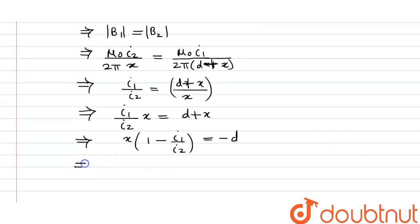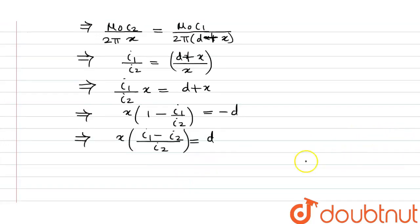So it will further give us x bracket i1 minus i2 divided by i2 equals d. So now we know the values of i1, i2, and d, so we can put it here. So it will become x equals i2 divided by i1 minus i2 multiplied by d.